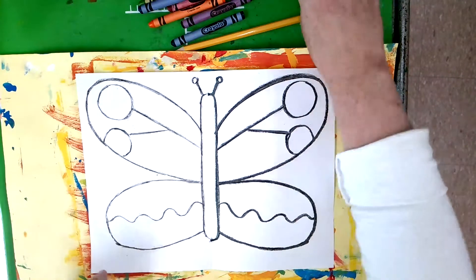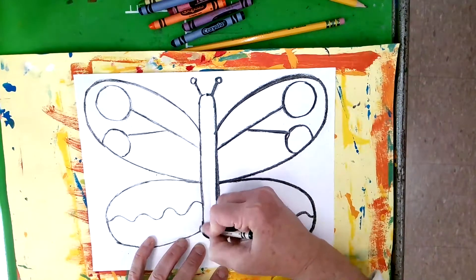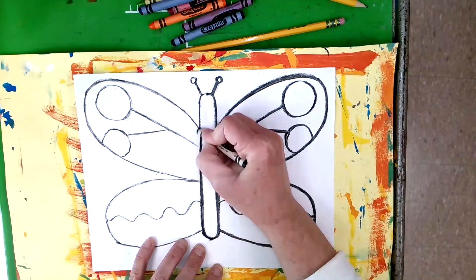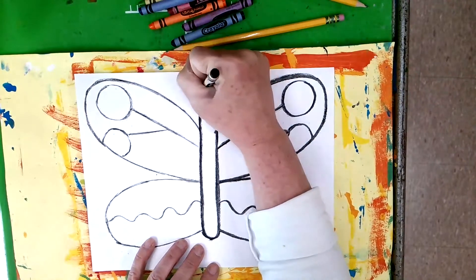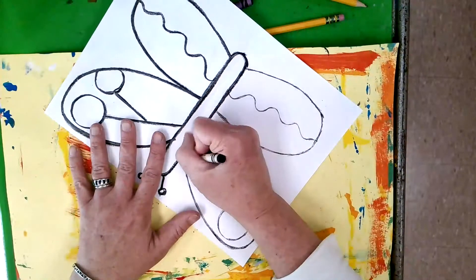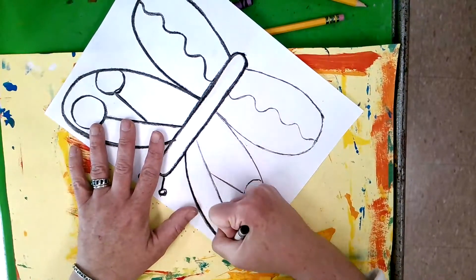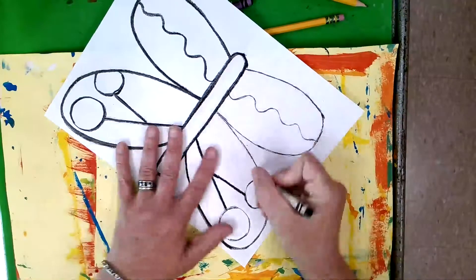Now, if you want to, you can go back and trace over these copied lines to make the black line darker. Also, you don't have to do this with black. If you wanted the outside edge of your butterfly to be purple or blue, you could use that color too. But I recommend using a dark color.